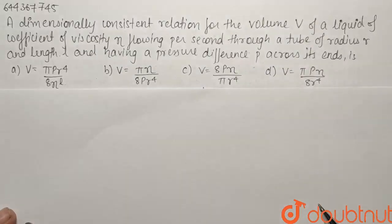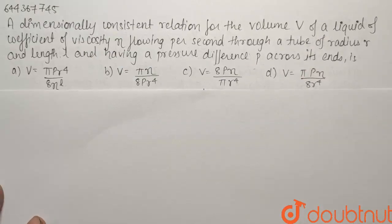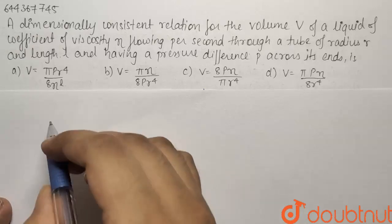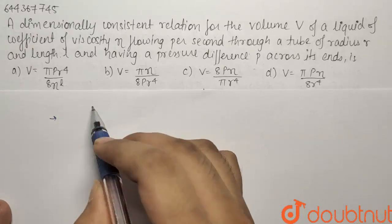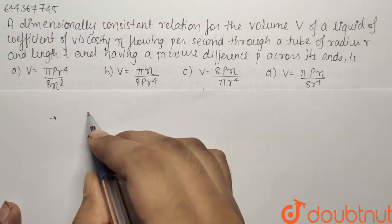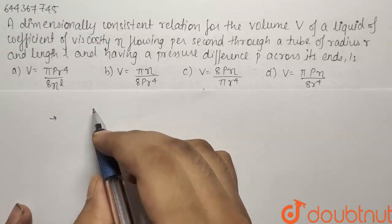So here we have a question from the chapter Dimensional Analysis. A dimensionally consistent relation for the volume V of a liquid of coefficient of viscosity eta flowing per second through a tube of radius R and length L and having a pressure difference P across its end is. We have been given we have to find the formula for the rate of flow of volume per second.